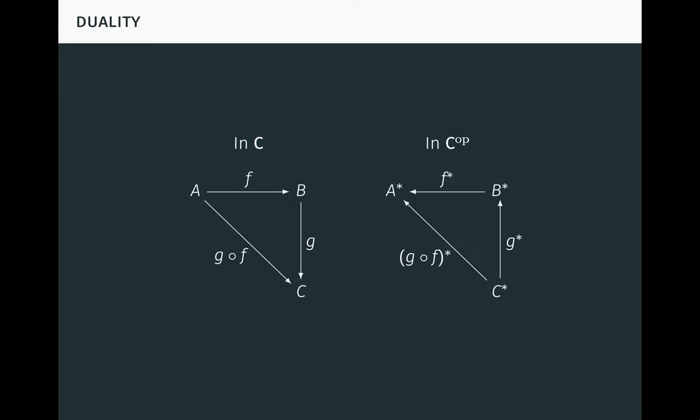On the left, we have a familiar commutative triangle in C. F goes from A to B, G goes from B to C, and the composite G ∘ F goes from A to C, making the triangle commute. On the right, we have the same commutative triangle in C^op. Here, F* goes to A* from B*, G* goes to B* from C*, and (G ∘ F)* is the composite F* ∘ G*, going to A* from C* and making the triangle commute. As you can see, the arrows in C have just been formally turned around.